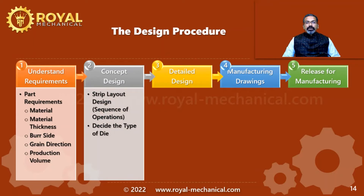Step 2 is to perform the concept design. In the context of the press tool, the concept design is to finalize the strip layout. A strip layout is a drawing which depicts the sequence of operations to manufacture the part. During the concept design stage, we are also going to decide the type of the die. In this course, the type of the die has already been decided — we are going to design a blanking die for the power screw support bracket of a car scissor jack.